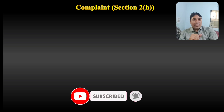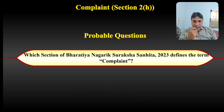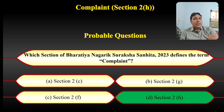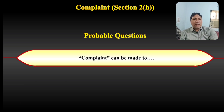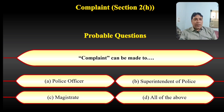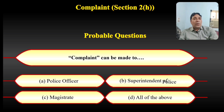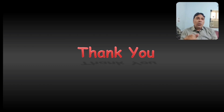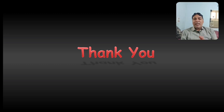Another question from 2016 JMFC exam — complaint means: (A) allegation made to a magistrate for taking action that some person has committed an offense, (B) allegation made to a police station officer that some person committed an offense, (C) such allegation made to superintendent of police, (D) includes all of the above। Since complaint means allegation made orally or in writing to a magistrate, option A is the correct answer. Probable question: which section of Bharatiya Nagarik Suraksha Sahita 2023 defines the term complaint? Section 2(H) is the correct answer. And complaint can be made to — a police officer, superintendent of police, magistrate, or all of the above? Magistrate is the correct answer; option C. I hope you understand this topic — please subscribe my channel, hit the notification button, hit the like button, and share this video with your friends.